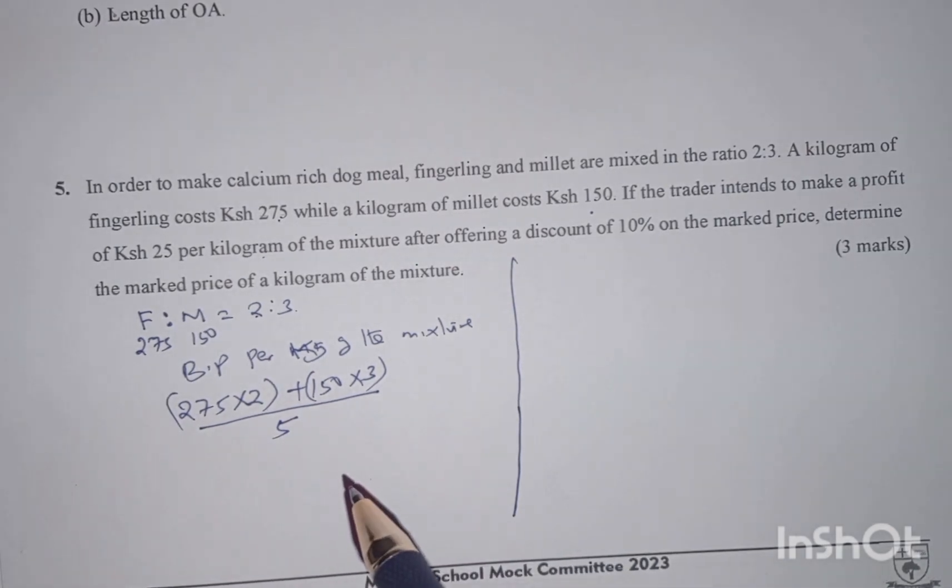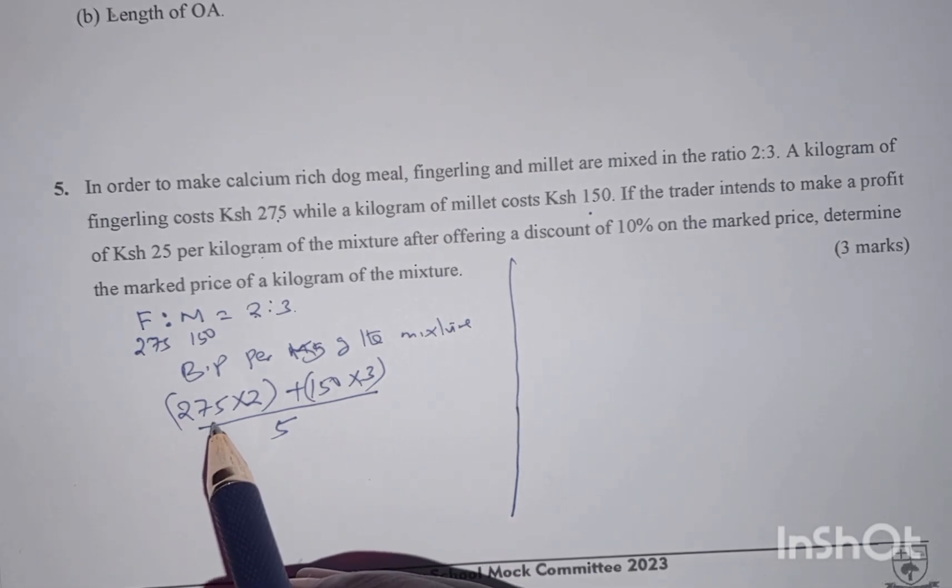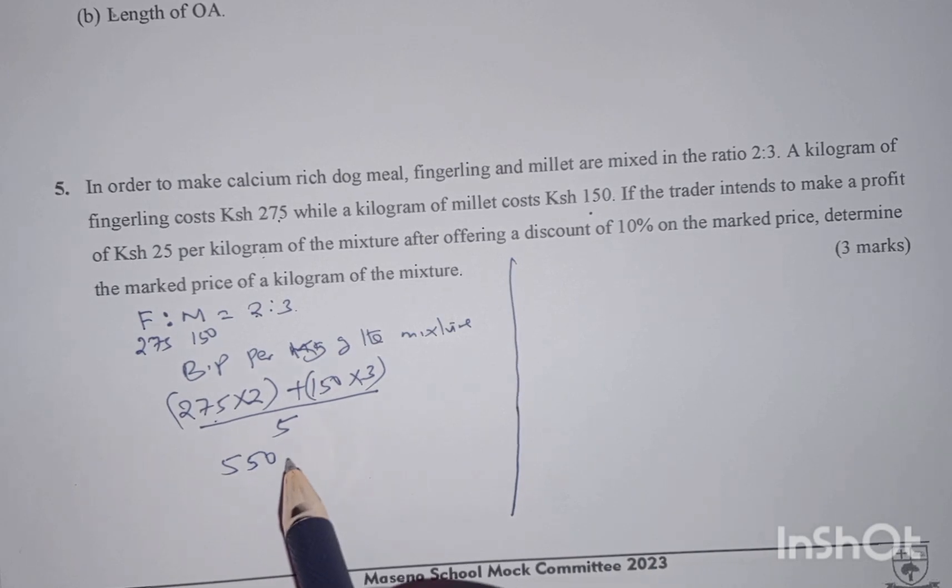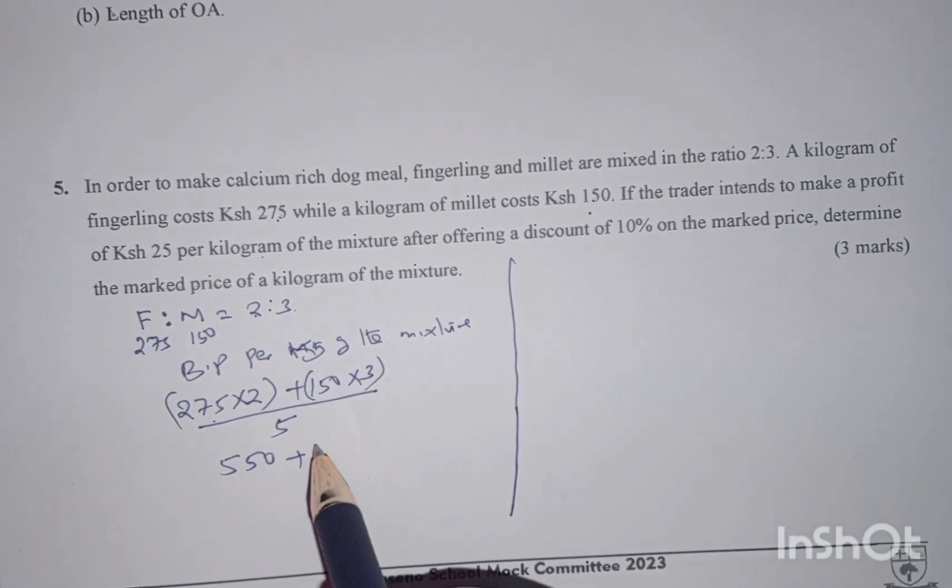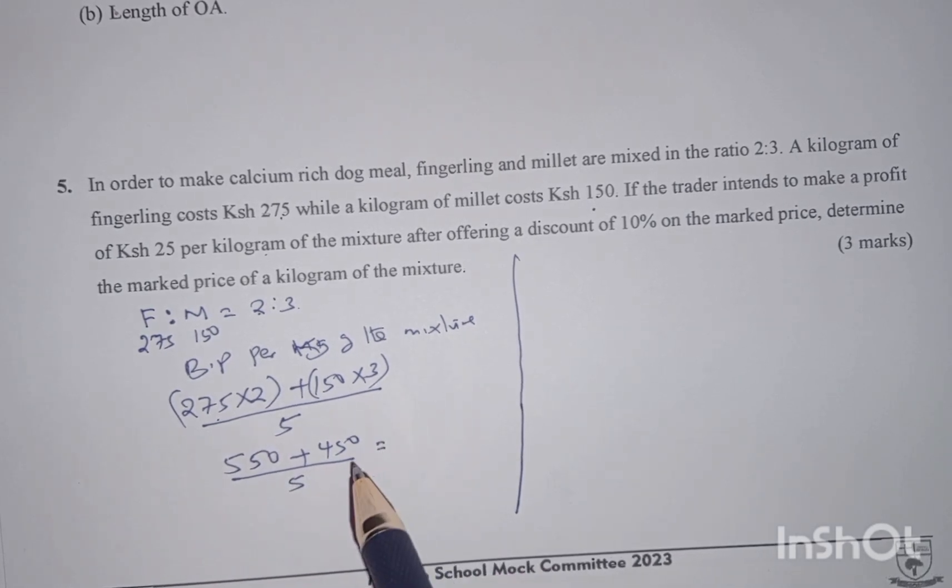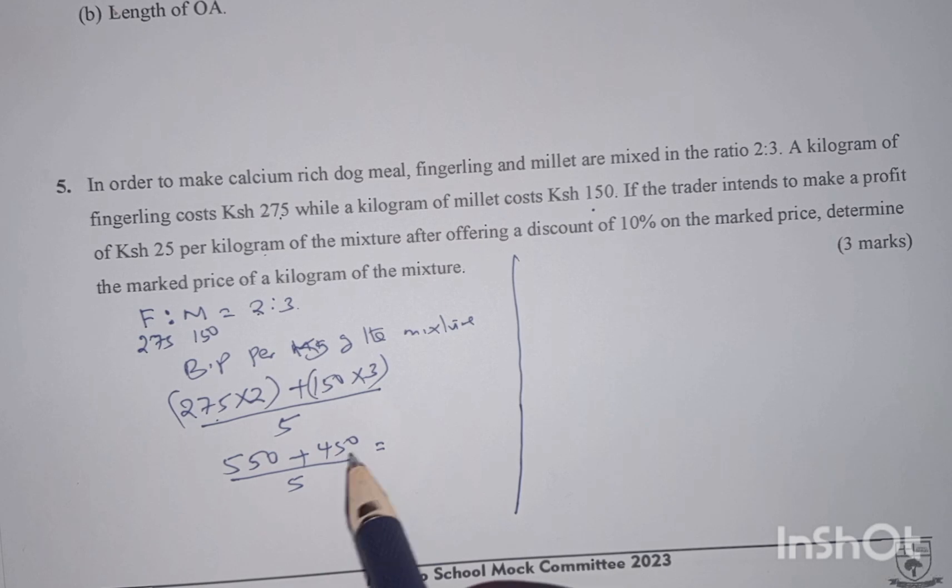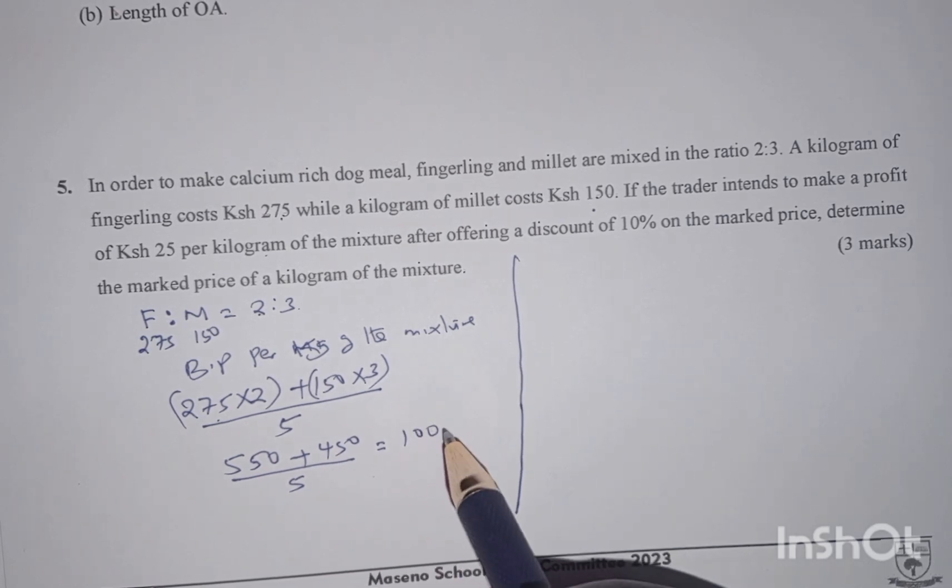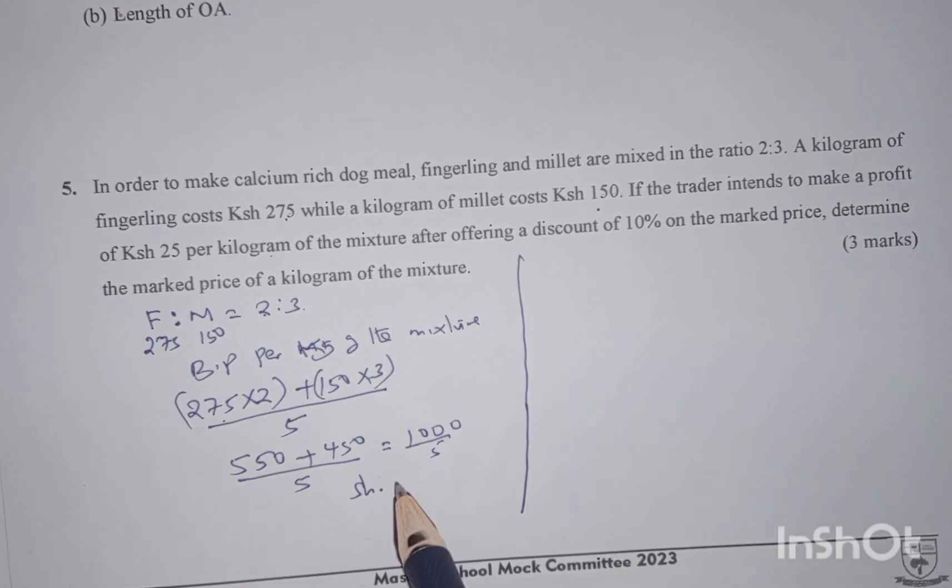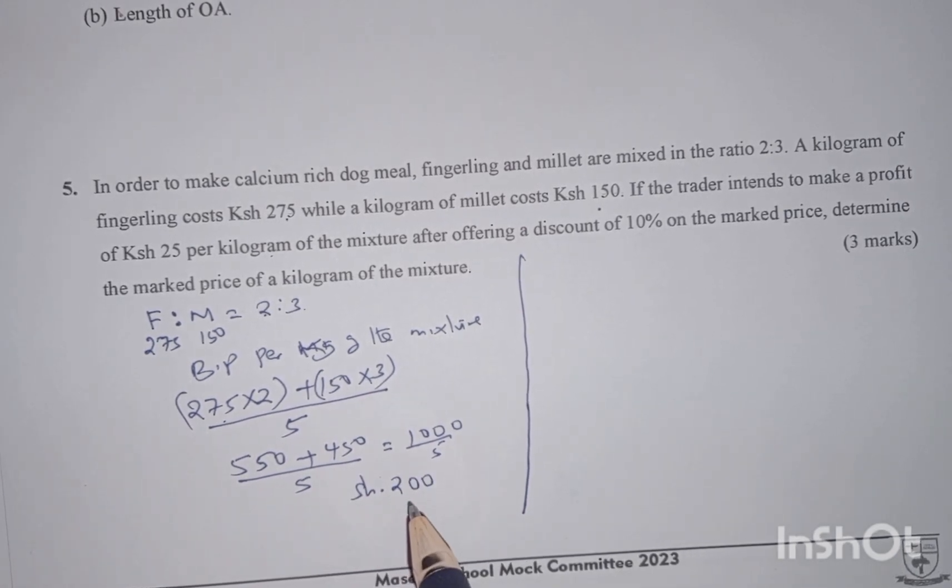From here we can proceed. 275 times 2 will give us 550, plus 150 times 3 gives 450. You divide by 5. Remember the 2 will give us 1,000 divided by 5 which gives us shilling 200 as the buying price of the mixture per kg.